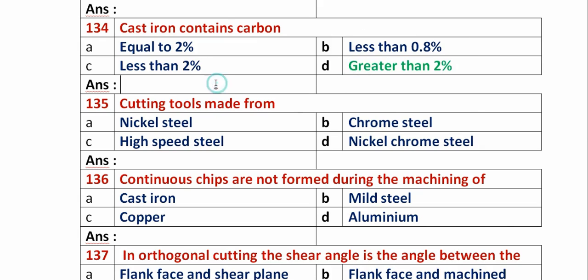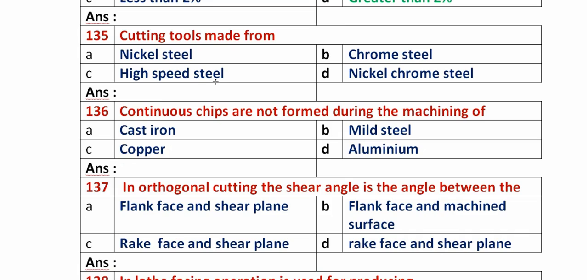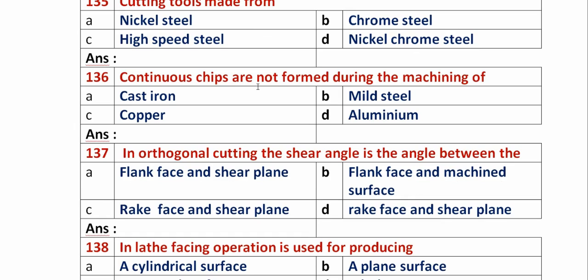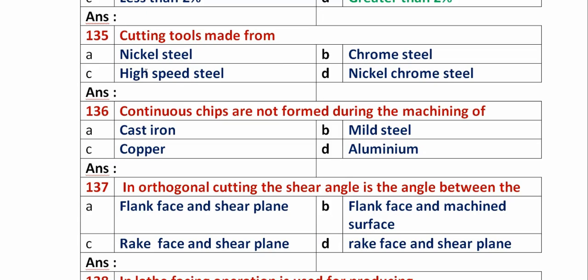Question 135: Cutting tools are made from? Option A: nickel steel. Option B: chrome steel. Option C: high speed steel. Option D: nickel chrome steel. Cutting tools are made from HSS, meaning high speed steel. So option C is the right answer.